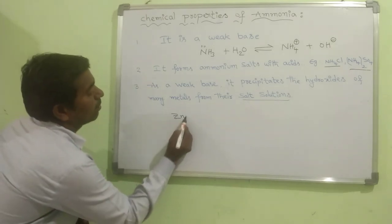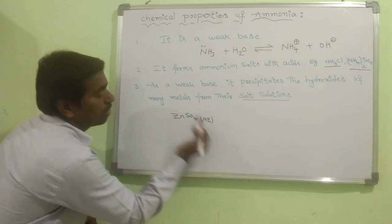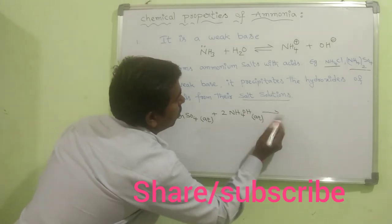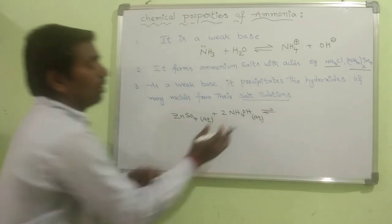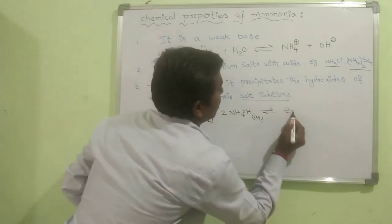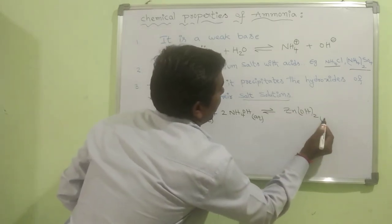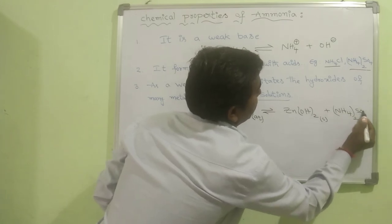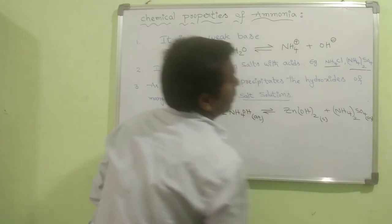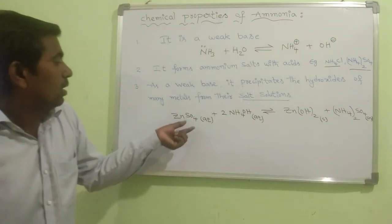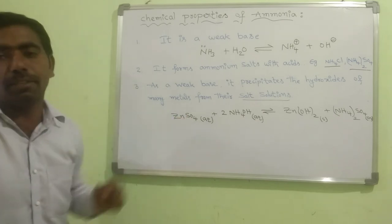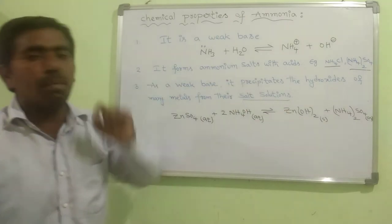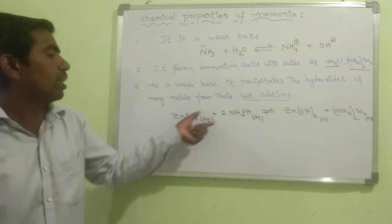For example, I am taking zinc sulphate in aqueous medium. To this, I am adding ammonium hydroxide solution. When zinc sulphate reacts with ammonium hydroxide, it forms Zn(OH)₂ as a solid precipitate and ammonium sulphate in aqueous medium. So, here, a salt solution of a metal is treated with ammonium hydroxide and a precipitate is obtained. This is about the chemical property of ammonia with salt solutions of metals.